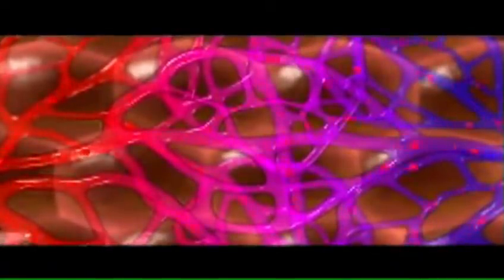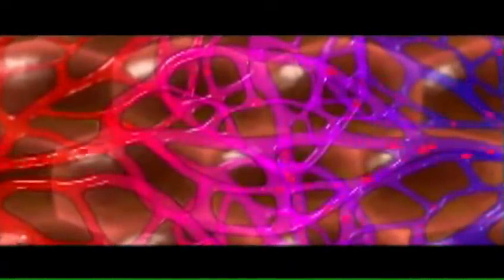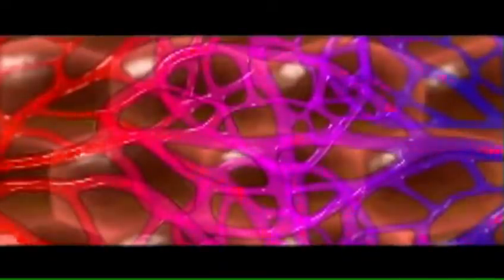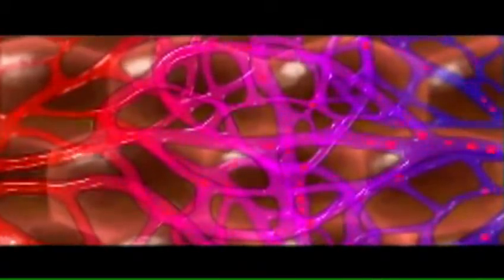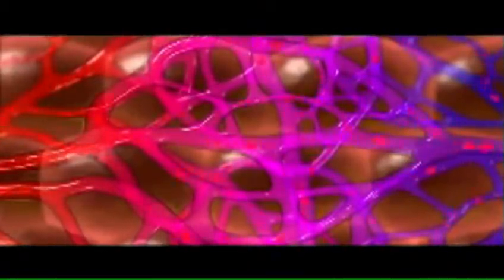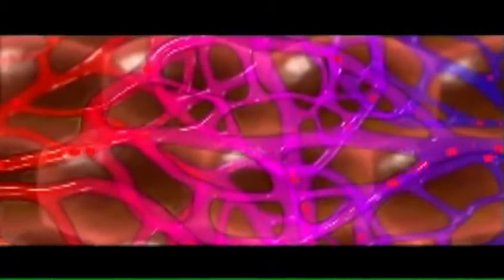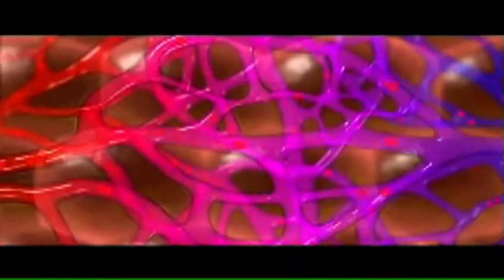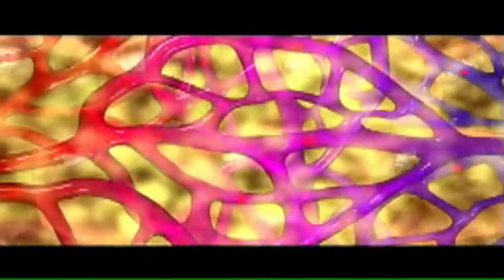Capillaries are so narrow that red blood cells must pass through them in single file. Consequently, blood is sure to pass very close to the capillary walls. In addition, capillaries are so numerous that no body cell is more than 100 micrometers or 4 thousandths of an inch from a capillary. These factors facilitate the exchange of materials by diffusion.